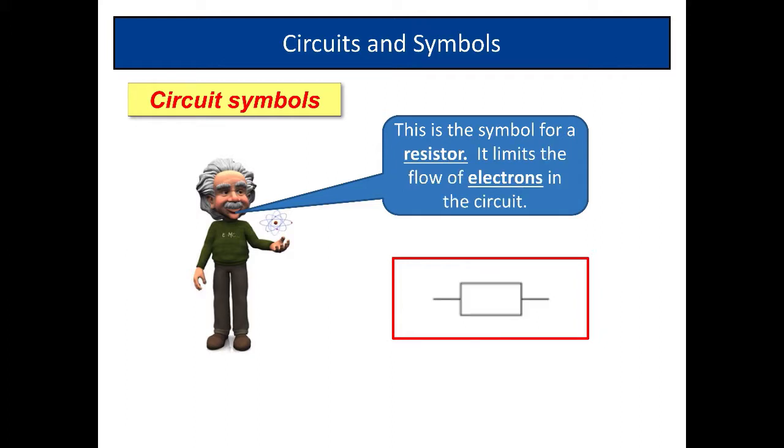This is the symbol for a resistor. What the resistor does is it resists the flow of electrons. So electricity is the flow of electrons. A resistor resists the flow of them. And that's the symbol there, a very easy symbol there for a resistor.